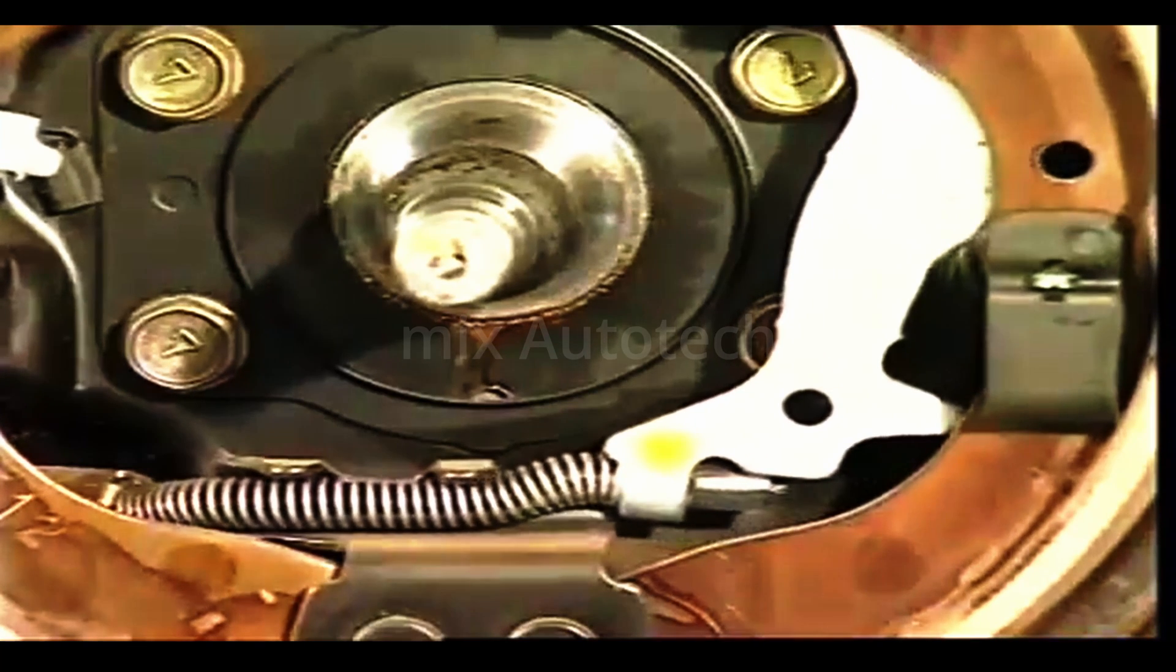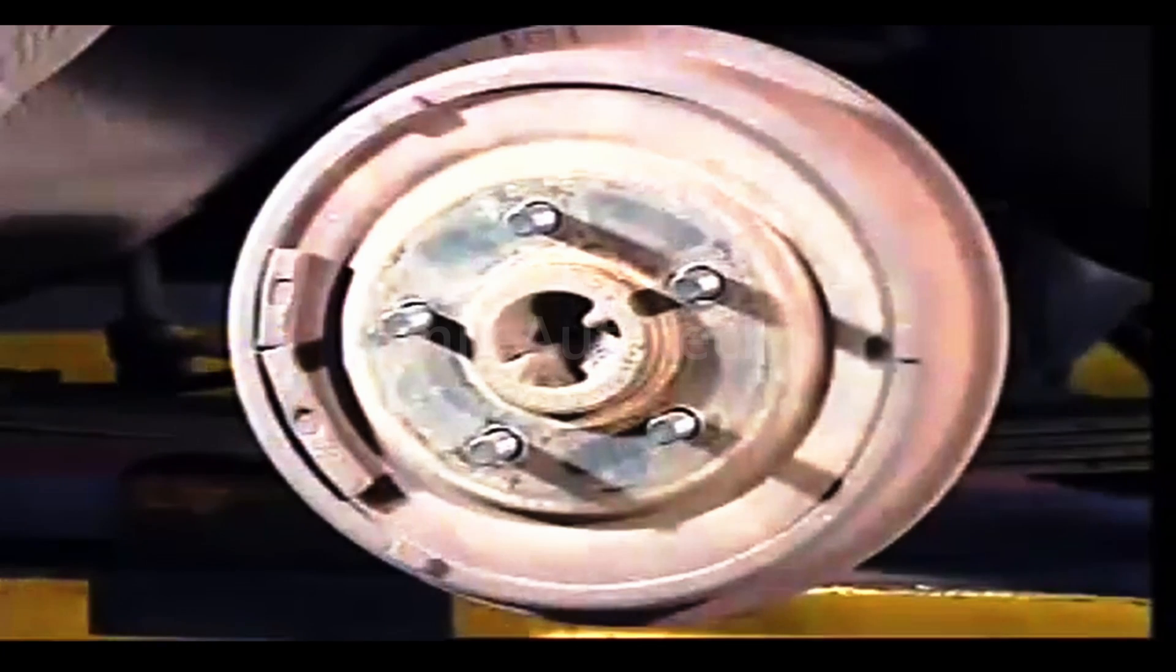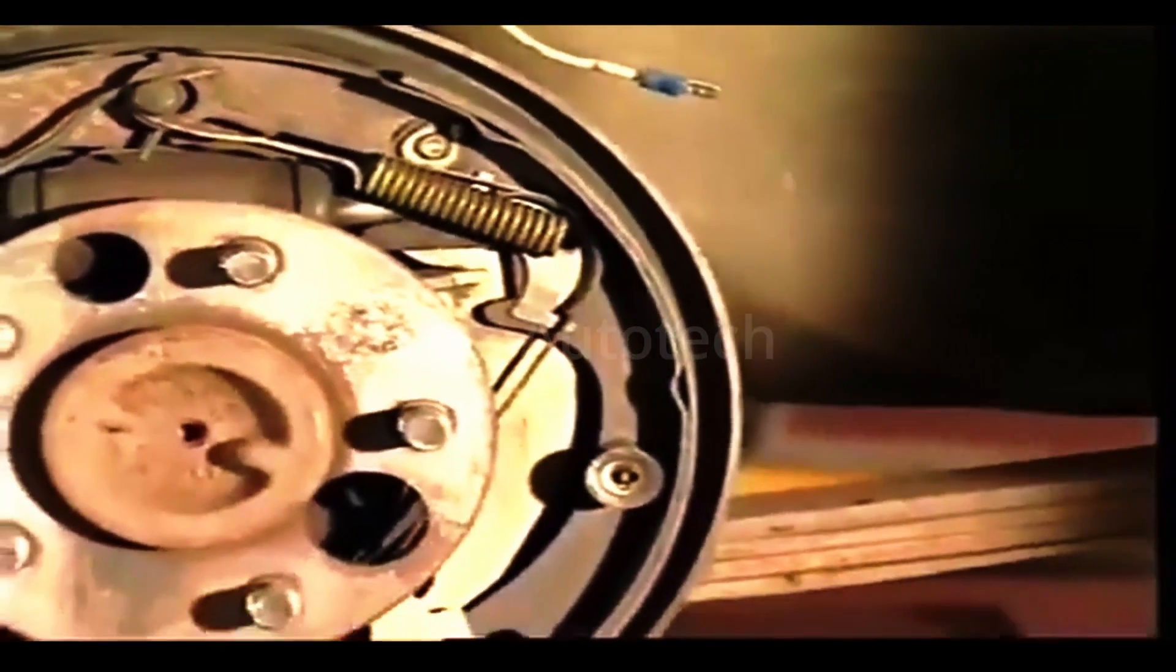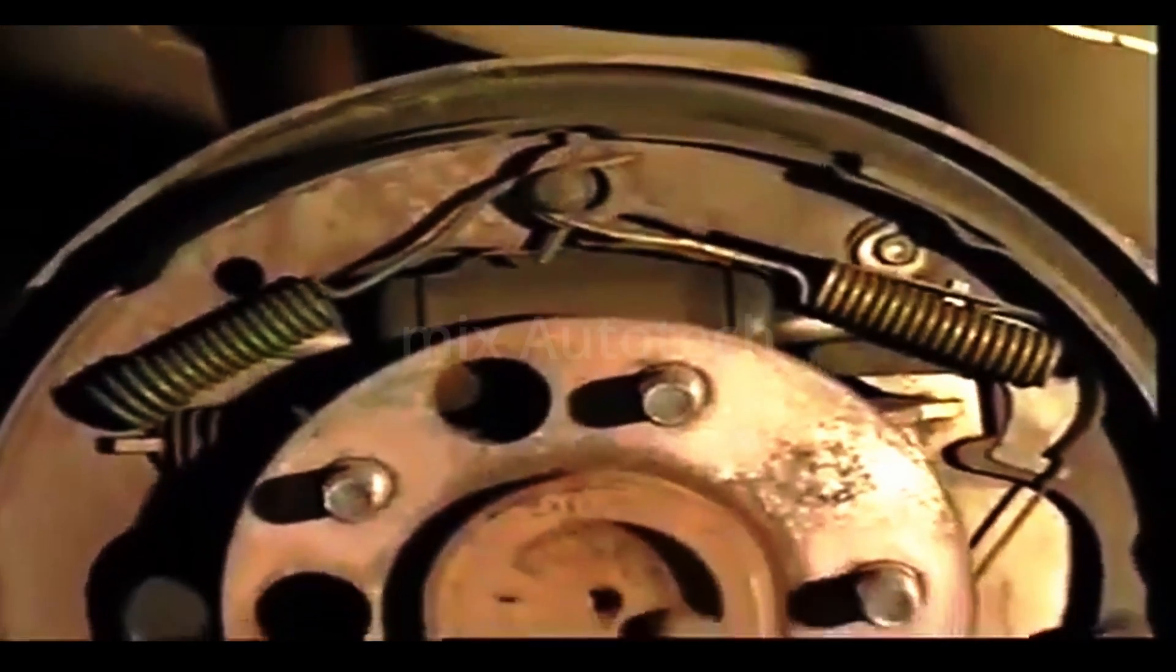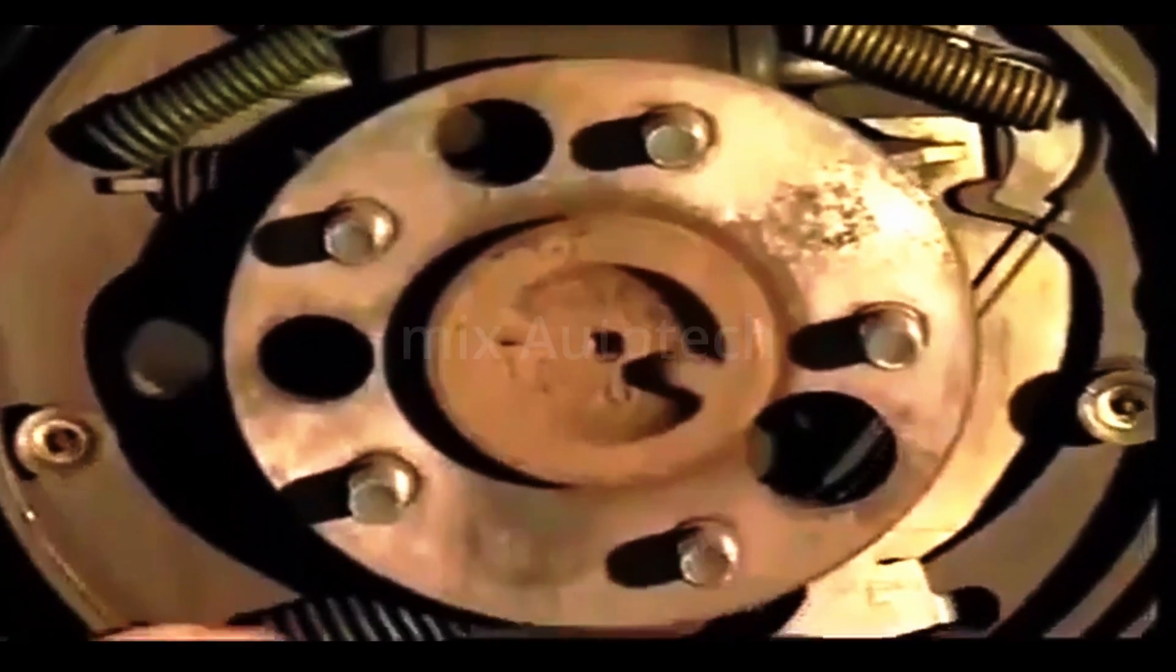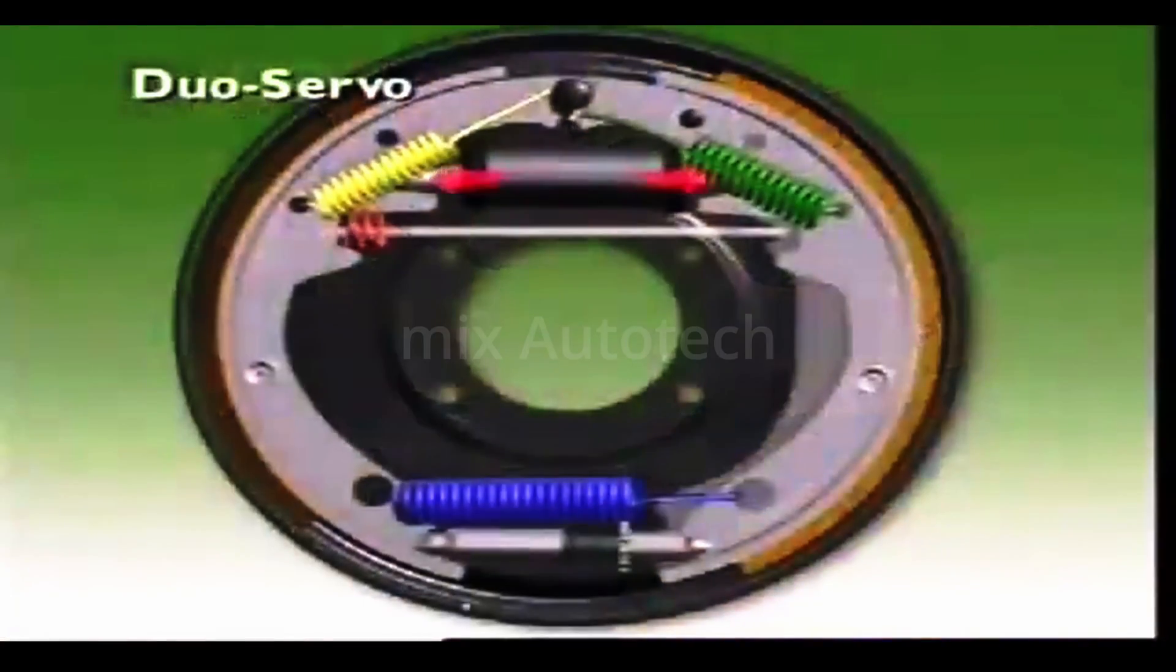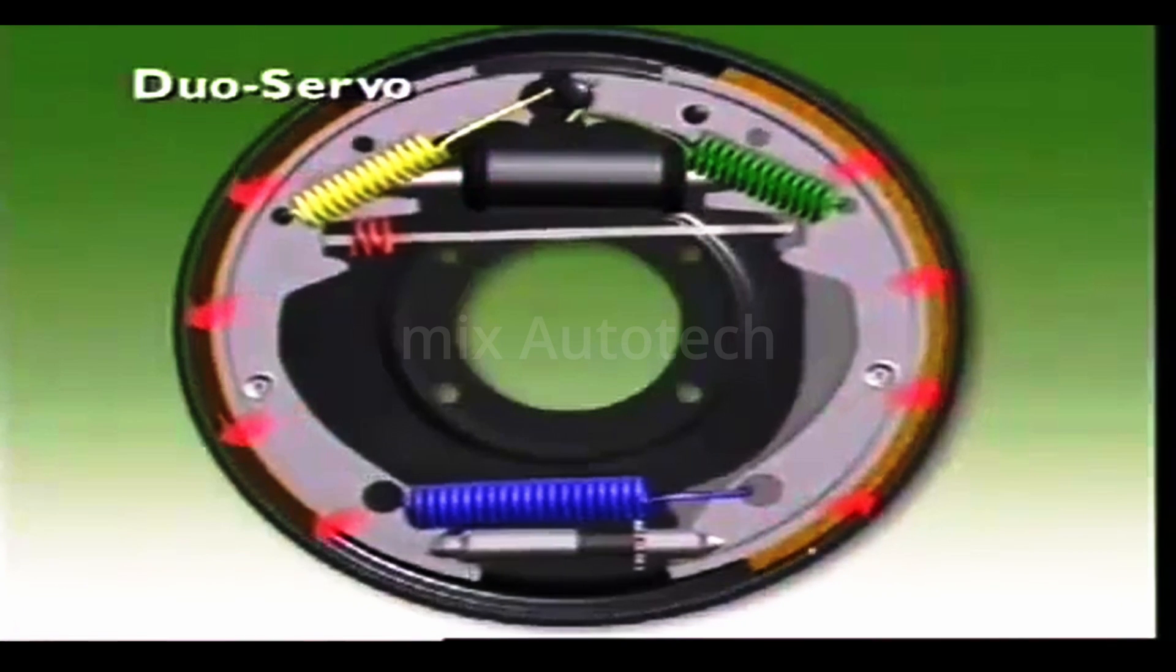The duo servo design also uses one wheel cylinder with two pistons. It is a high energy brake, that is, it exerts large self-energizing forces. The lower ends of the shoes are linked but aren't firmly anchored to the backing plate. This lets the complete shoe assembly float within limits. When the brakes are applied, both shoes are carried around by the drum until the secondary shoe contacts the anchor pin.